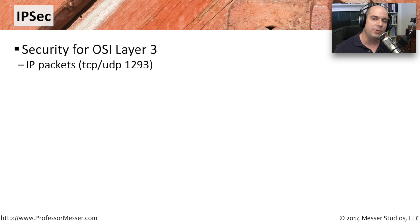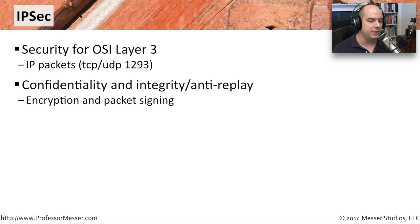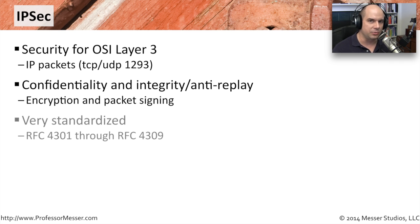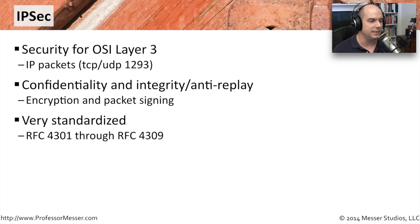For situations where any type of data needs to be encrypted — not in a web browser or terminal — we have another encryption mechanism called IPsec. This is a type of security built specifically for TCP/IP, designed to work at layer three with IP packets. IPsec allows confidentiality and integrity in communication between devices or hosts, with built-in encryption and the ability to sign every packet. It's an extremely standardized mechanism found on routers, firewalls, and clients, defined in RFC 4301 through RFC 4309.